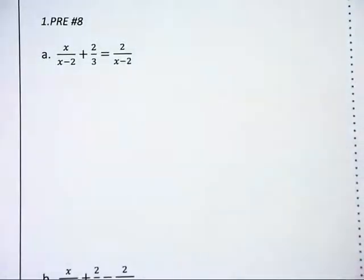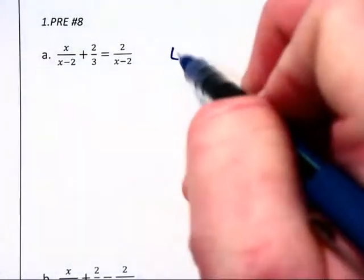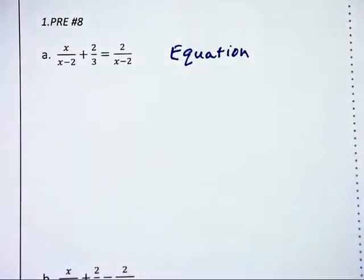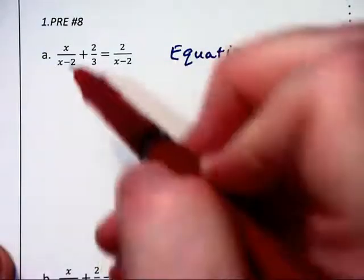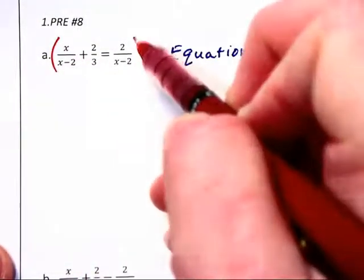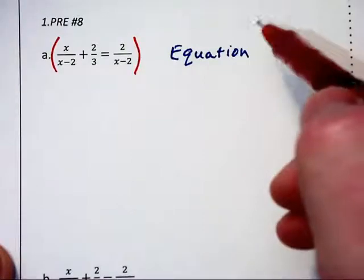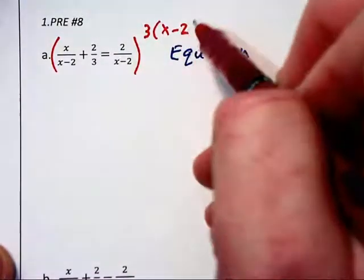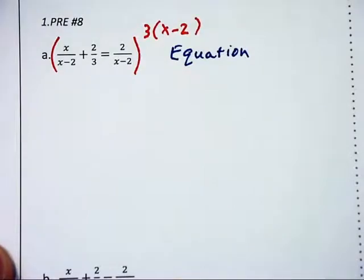In this next problem, we begin with an equation because we see an equal sign. And since it is an equation, we would like to clear the fractions by multiplying through by the least common denominator of the given denominators, and that will be 3(x - 2) that we are going to distribute through on both sides.